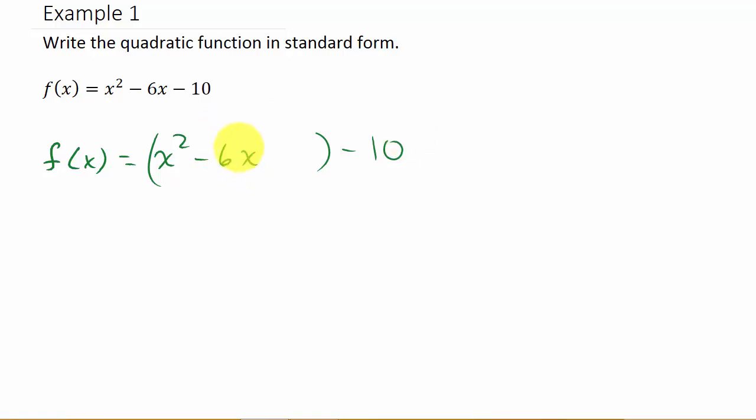We take the number in front of x, the 6, and we half it. When we half the 6, we get 3. Then you square it, and that's going to give us 9. So that means we add 9. And since we added 9 here, we have to subtract 9 here.